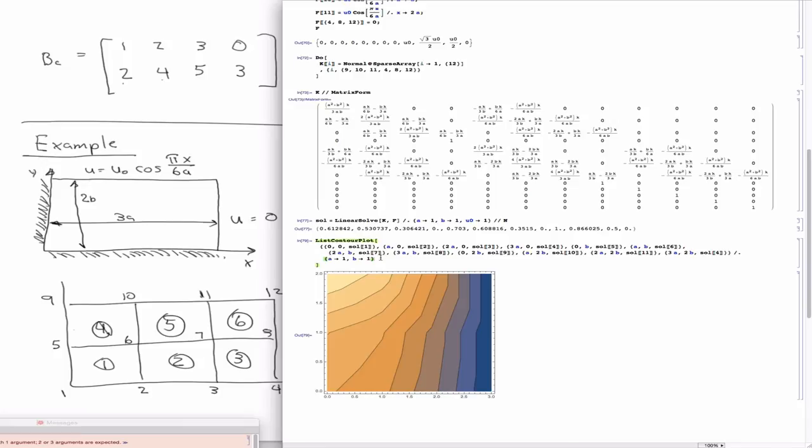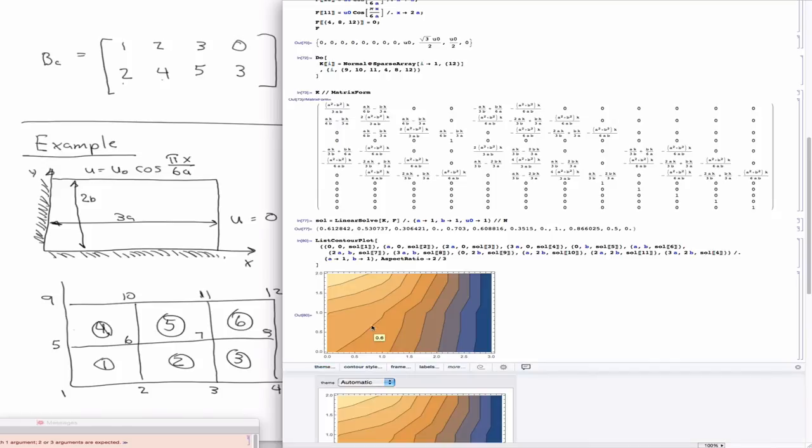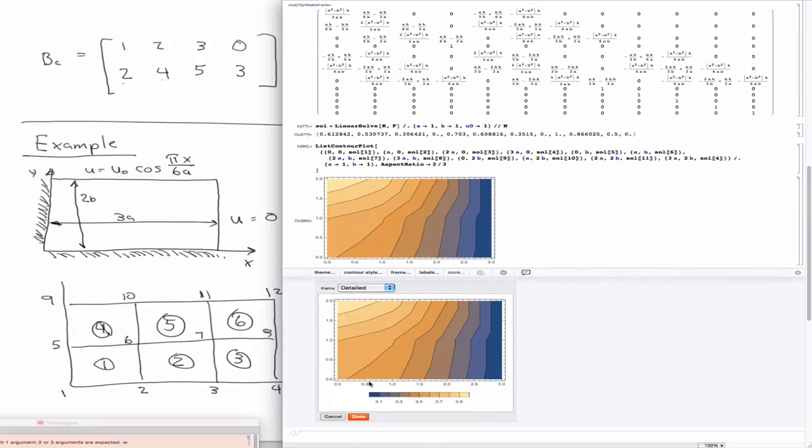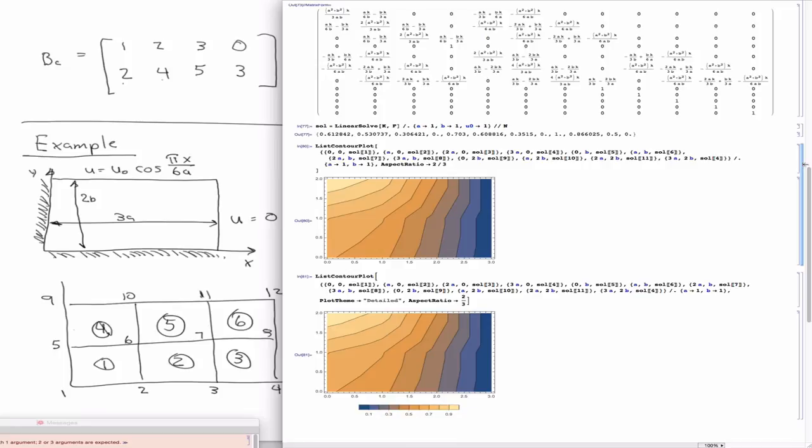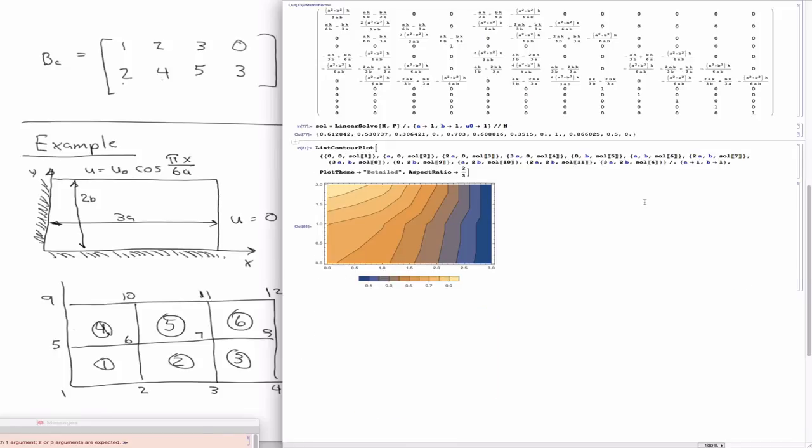We can make it look a little better. We can set the aspect ratio correctly to 2 over 3. I think we can give it a detailed theme so we have a legend. So there it is. You can see the warm colors are closer to 1 and the cool colors are closer to 0, which is consistent with what you'd expect. If there's no diffusion or no temperature along this edge, that would be 0, and it would be the highest where the cosine equals 0 here at 1.